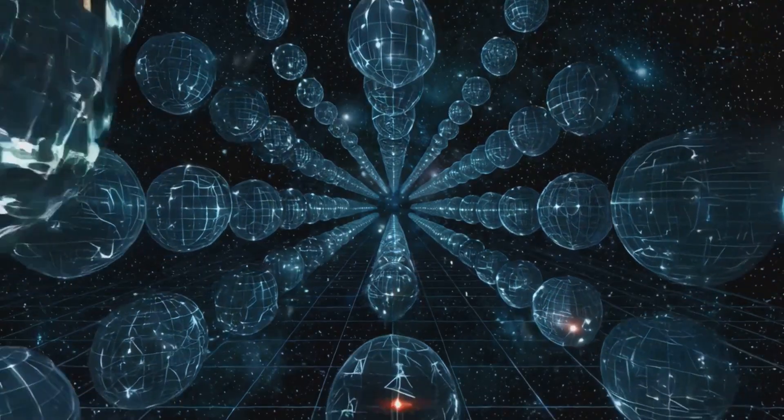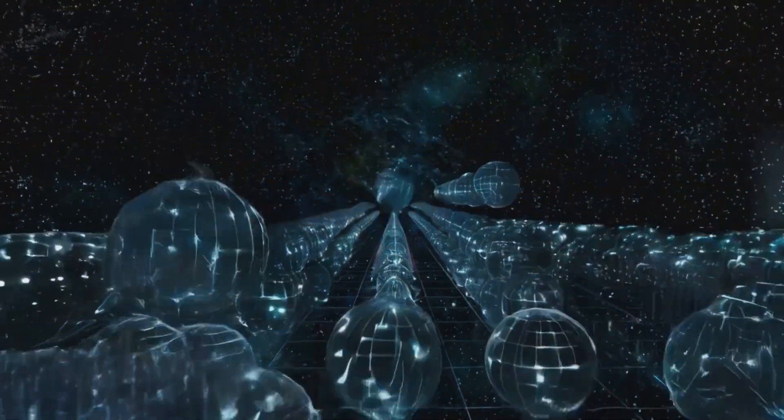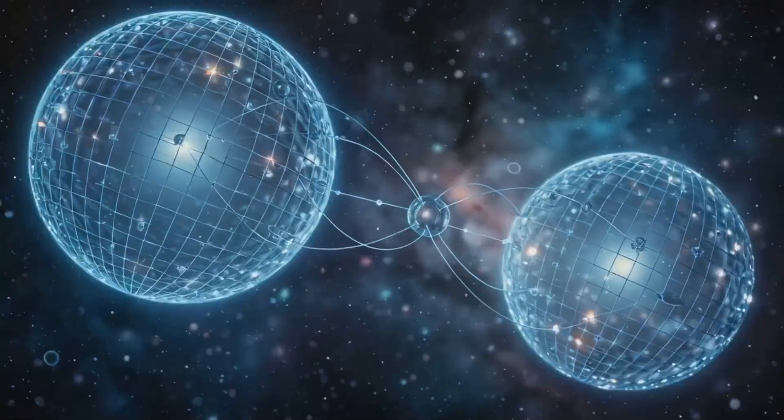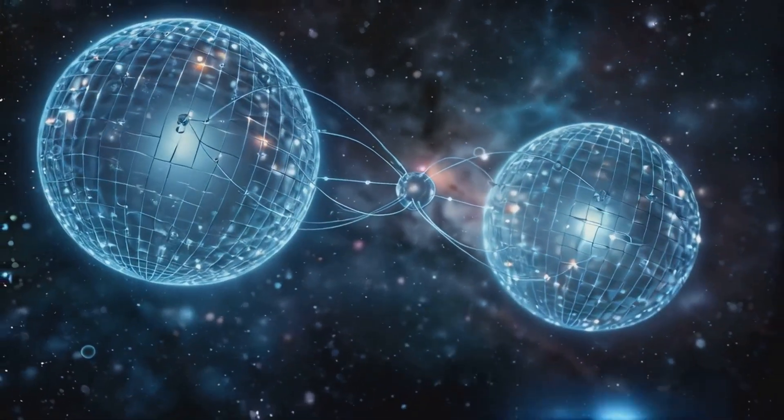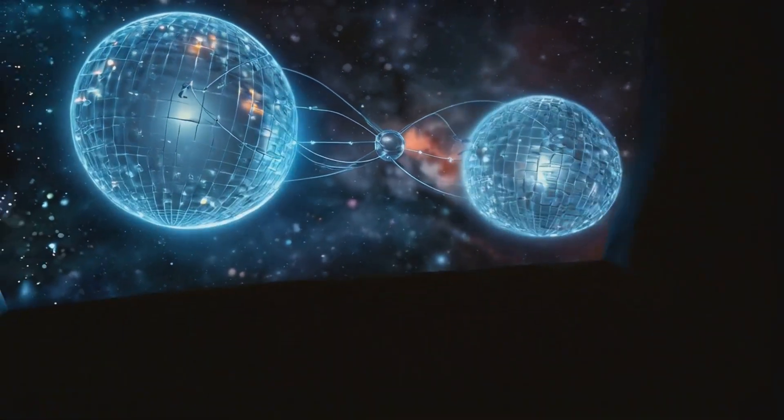Now imagine not just a single Bloch sphere, but an infinite array of them, each representing a point in space-time. These spheres are entangled, meaning they do not exist independently, but instead reflect and interact with one another instantaneously.